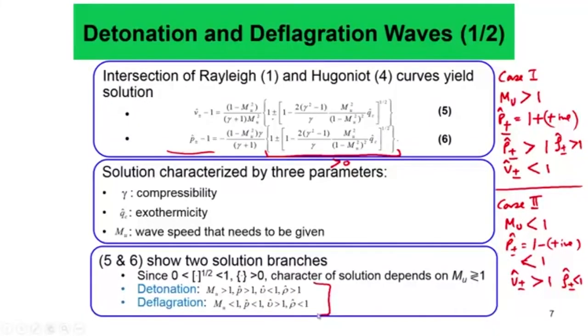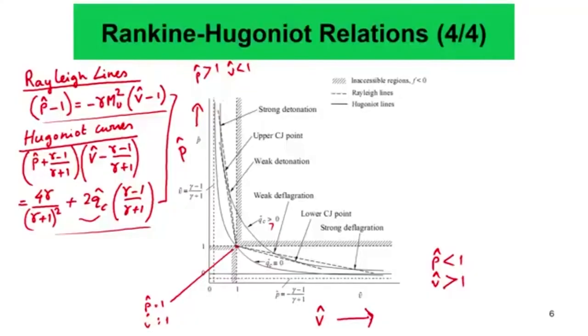This is the very important concept of the difference between deflagration and detonation — one of the most important central concepts in combustion. This arrives by considering the intersection of the Rayleigh and Hugoniot lines. The difference is: when mu is greater than 1, p_cap is greater than 1, v_cap is less than 1, and rho_cap is greater than 1 — that is called detonation. For deflagration, mu is less than 1, p_cap is less than 1, v_cap is greater than 1, and rho_cap is less than 1. This branch is the supersonic branch and this branch is the subsonic branch.